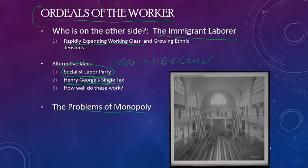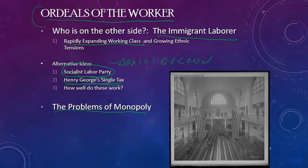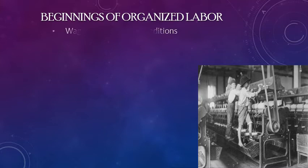We already talked about the problems of monopoly in yesterday's video — we'll get back into monopoly more when we get to Chapter 19. Even though they fail to a certain degree, the single tax and the Socialist Labor Party do help us move towards concepts of early organized labor.